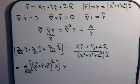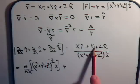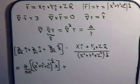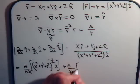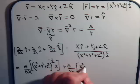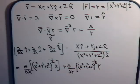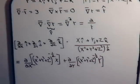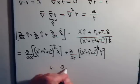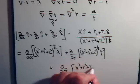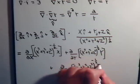The second term: j dot i is 0, j dot k is 0, j dot j is 1. So now we're going to be taking the partial with respect to y of y divided by this — that is, the partial with respect to y of (x² + y² + z²)^(−1/2) times y. And then for our last term, plus the partial with respect to z of (x² + y² + z²)^(−1/2) times z.